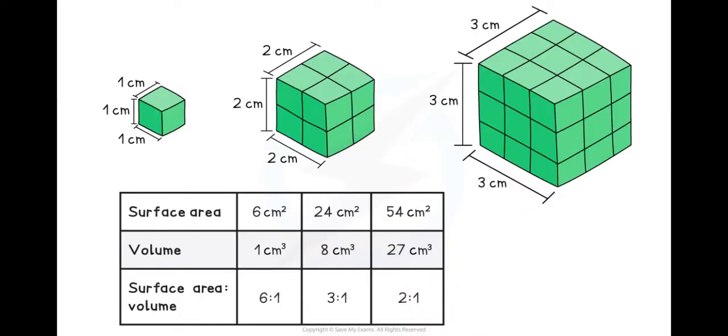Now, to actually get your surface area to volume ratio, you need to do something else as well. Here I've got three cubes. So the smallest cube there, to work out the surface area, I'm doing one times one times six to get me six centimeter squared. In order to get my volume, I'm doing one times one times one to get my one centimeter cubed, which gives me a ratio of six to one.